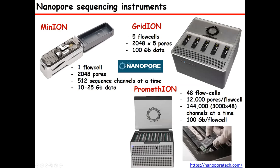There is another instrument — the PromethION — which has different flow cells with up to 12,000 pores per flow cell, so you can sequence 100 gigabytes per flow cell. This is the flow cell model used for PromethION, which means you can achieve really high throughput sequencing. In plants, for example, you may want to sequence at really high depth, and that can easily be done using this, but it's quite expensive compared to other instruments — it costs about $125,000.